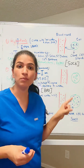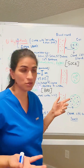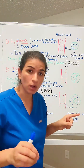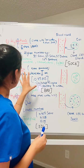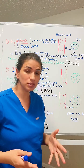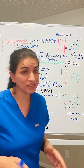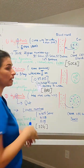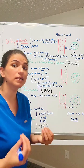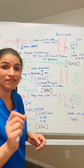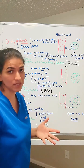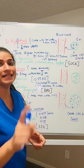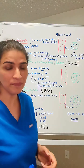Examples of isotonic solutions include 0.9% normal saline, lactated Ringer's, and 5% dextrose in water. To remember when to give isotonic, use the mnemonic 'BAD': B is for burn patient or blood loss, A is for anaphylaxis or sepsis, and D is for dehydration.